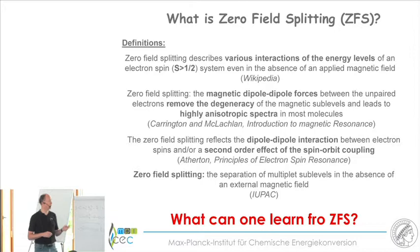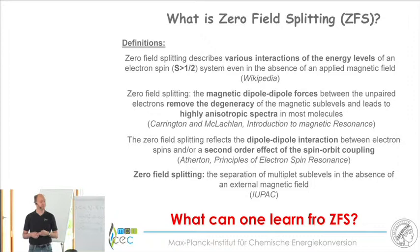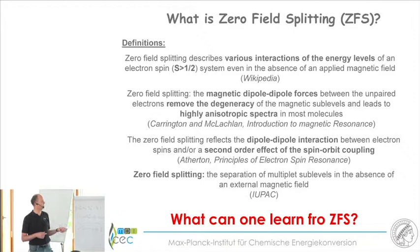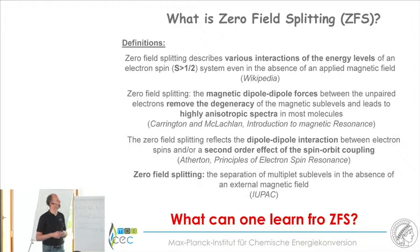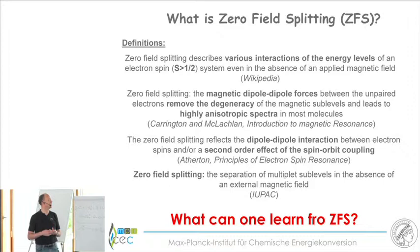Now I want to discuss zero-field splitting. Zero-field splitting parameters can be measured and derived from EPR experiments. Zero-field splitting, according to Wikipedia, is the interaction of energy levels of an electron spin larger than 1/2 even in the absence of an applied magnetic field — so we need at least two unpaired electrons. From Carrington and McLaughlin: the magnetic dipole-dipole forces between unpaired electrons remove the degeneracy of the magnetic sub-levels. From Atherton's book: zero-field splitting reflects the dipole-dipole interaction and/or second-order effect of spin-orbit coupling. The IUPAC definition: the separation of multiple sub-levels in the absence of an external magnetic field.